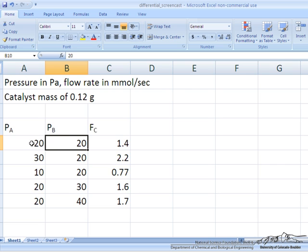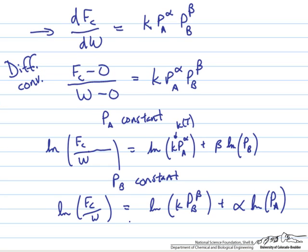Now all we need to do is take three data points at which B is constant and plot the log of Pa versus the log of Fc. And the slope of that will give us alpha, as we showed on the previous page.